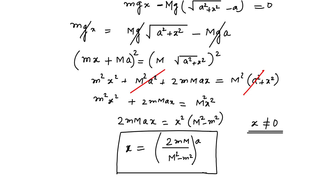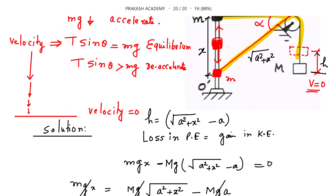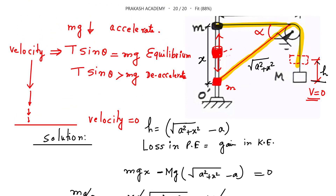Now here is a question for you: earlier I identified the equilibrium position where T sin θ equals mg and forces are zero. Can you calculate the distance the ring has fallen before reaching this equilibrium position? Try this on your own and discuss in the comment box. I hope you enjoyed this video — please like and share with your friends. Thank you.